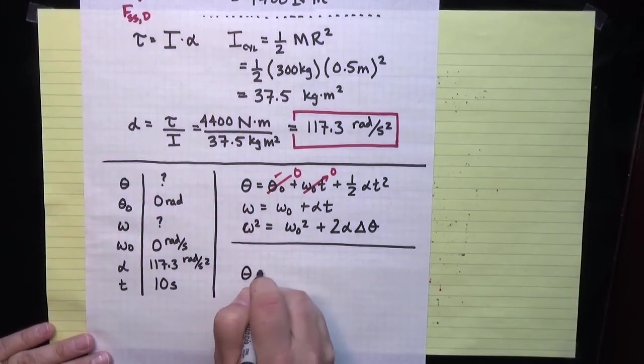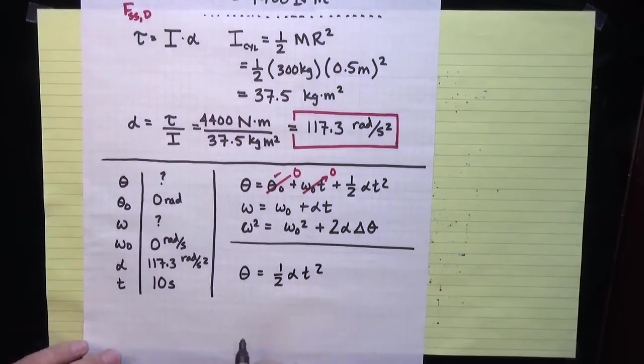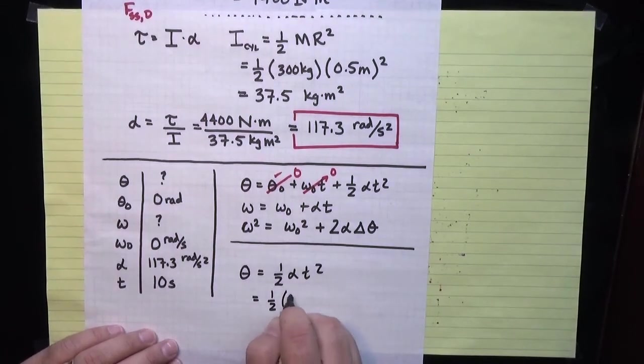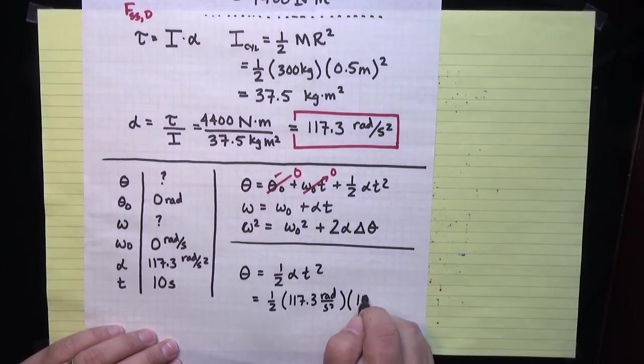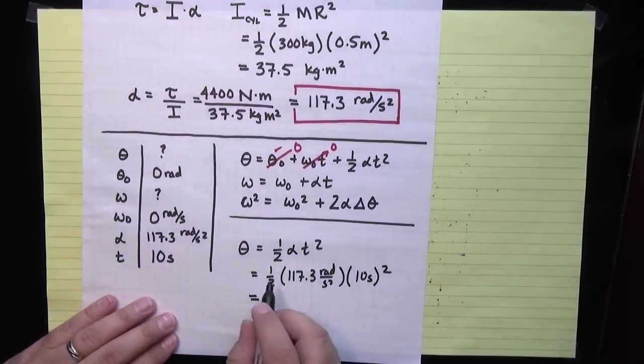Theta is equal to a half alpha t squared. If I put in the numbers, that's a half times 117.3 radians per second squared times the time, which is 10 seconds squared. If I numerically work that out, I get that there are 5,867 radians of rotation.